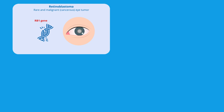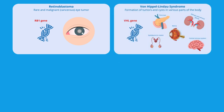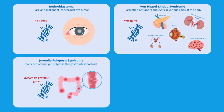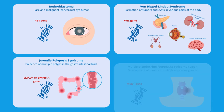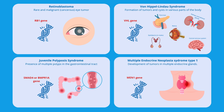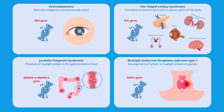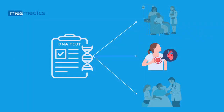Some examples are: Retinoblastoma, caused by a mutation in the RB1 gene; Von Hippel-Lindau syndrome, caused by a mutation in the VHL gene; Juvenile polyposis syndrome, which can be caused by a mutation in the SMAD4 or BMPR1A genes; Multiple endocrine neoplasia syndrome type 1, caused by a mutation in the MEN1 gene; and much more.